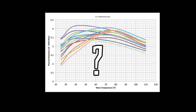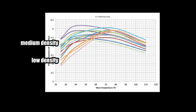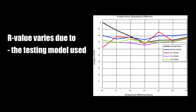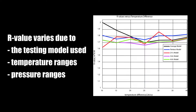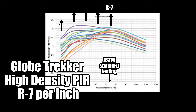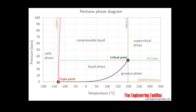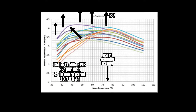Let's talk about that blowing agent, because there's something odd happening in this chart. It appears as though the colder it gets, the less effective PIR insulation becomes. Keep in mind that this chart shows typical lower or mid-grade PIR foam densities. Also keep in mind, if you stray away from the ASTM C518 standards, all types of insulation will vary their R-value over different temperatures. The PIR insulation used in Globe Trucker panels is rated at R7 to R7.4. It turns out that pentane has a phase change from gaseous to liquid at lower temperatures, which causes its thermal conductivity to increase, thus lowering the R-value of the insulation.